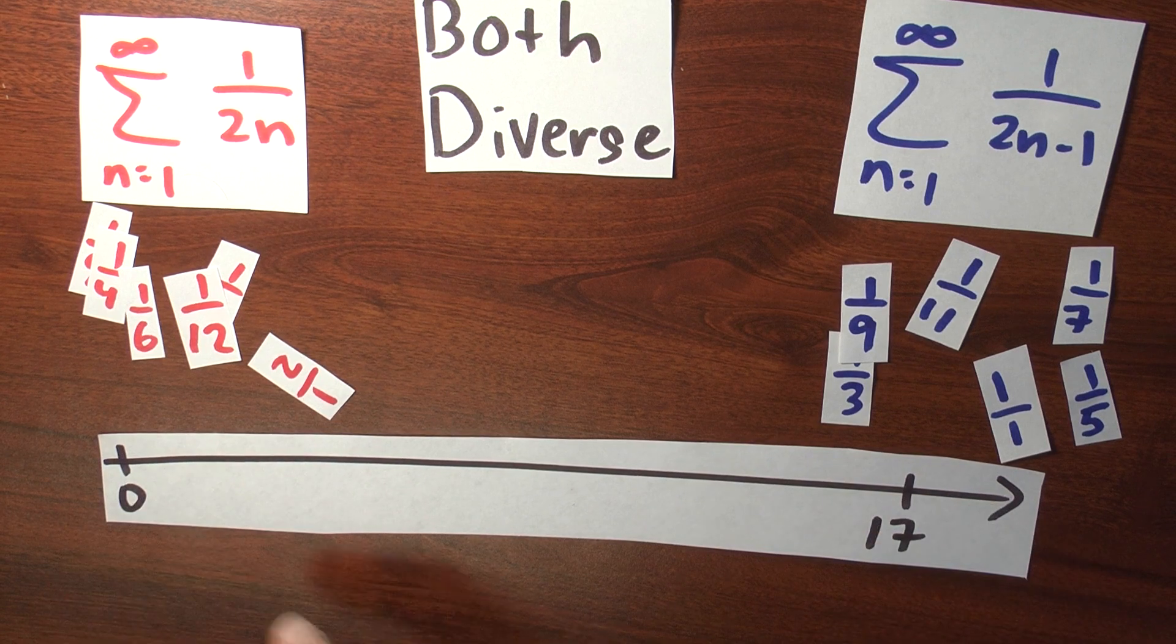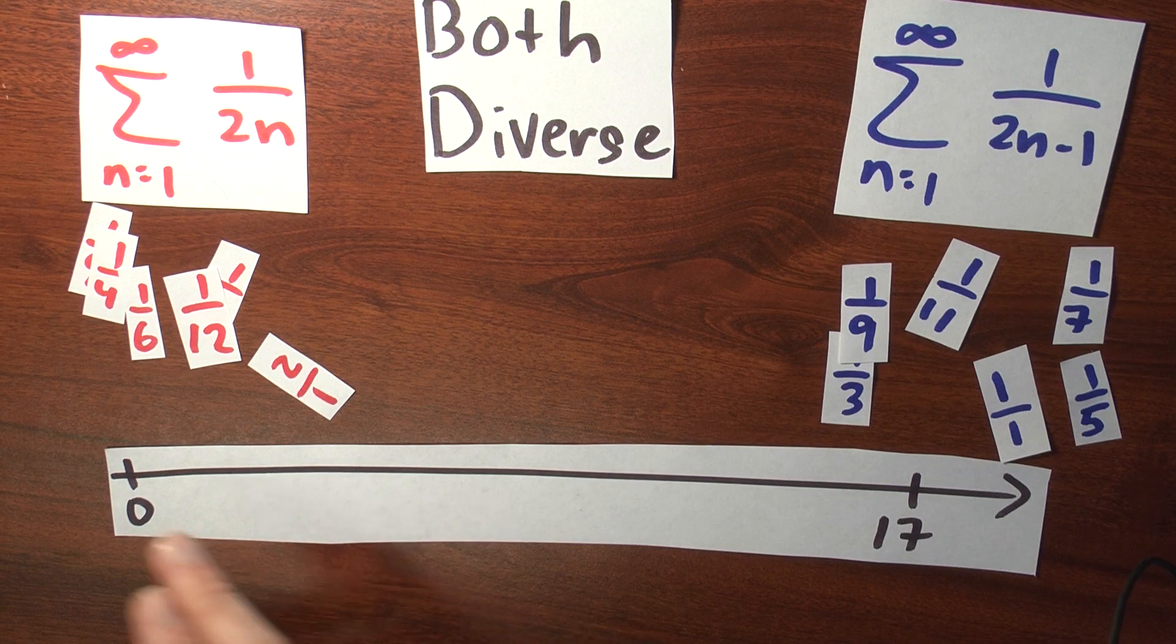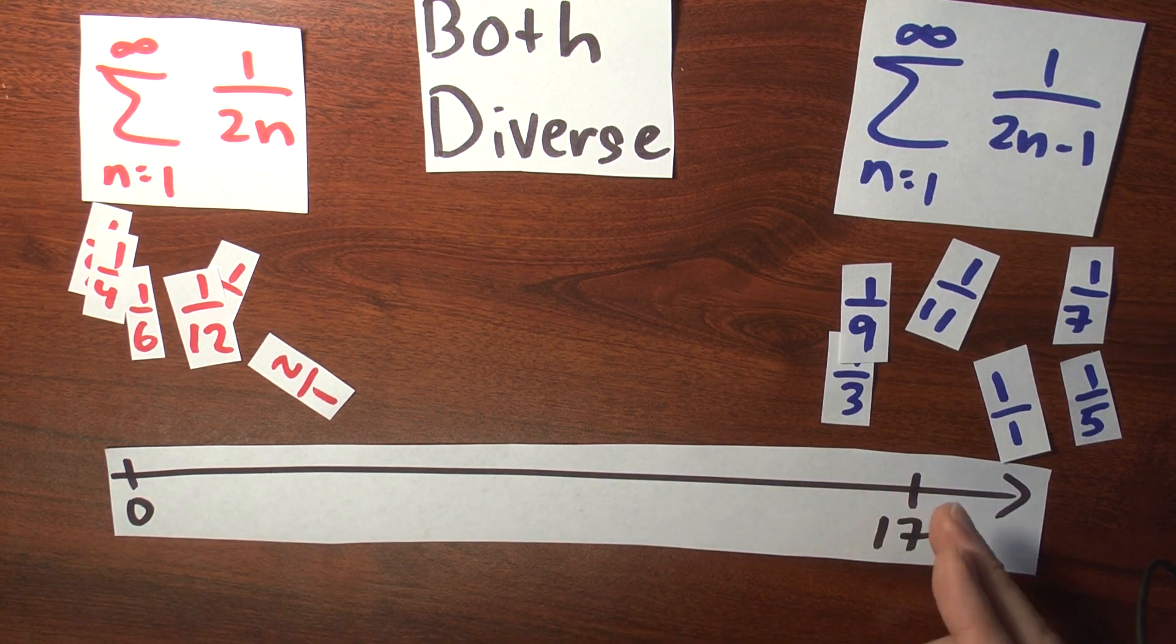Okay, well here we go. Here's a number line. Here's 0. Here's my goal, 17. Trying to pick up numbers from this pile so that I can move all the way past 17.